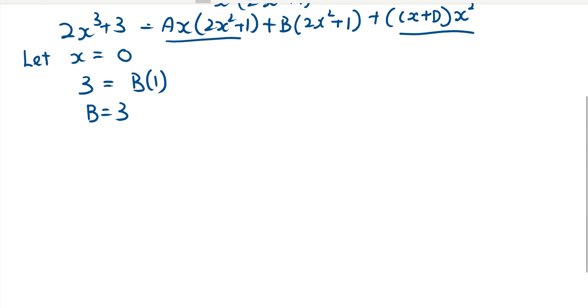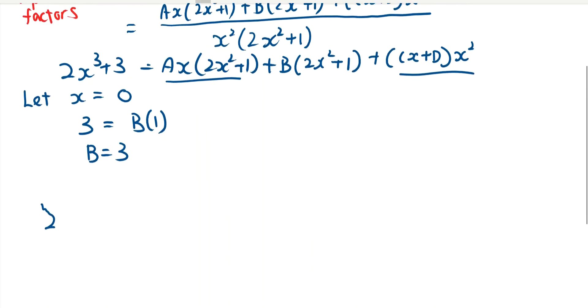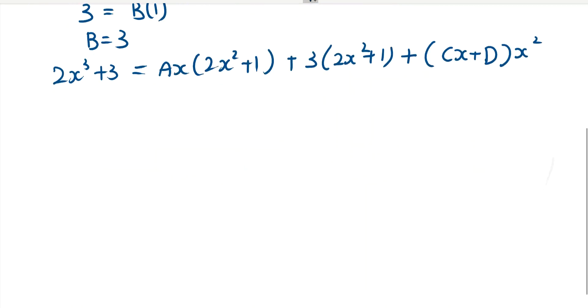So next, I will put it back in. So 2x cubed plus 3 equals to ax bracket 2x squared plus 1, plus 3 bracket 2x squared plus 1, plus cx plus d times x squared. So next, we have to use the comparison method to find our other unknowns.